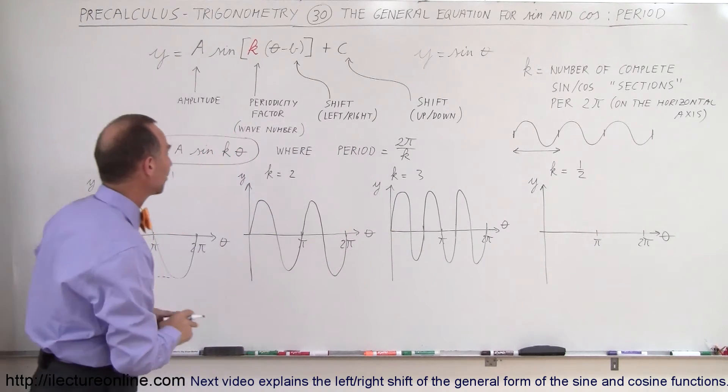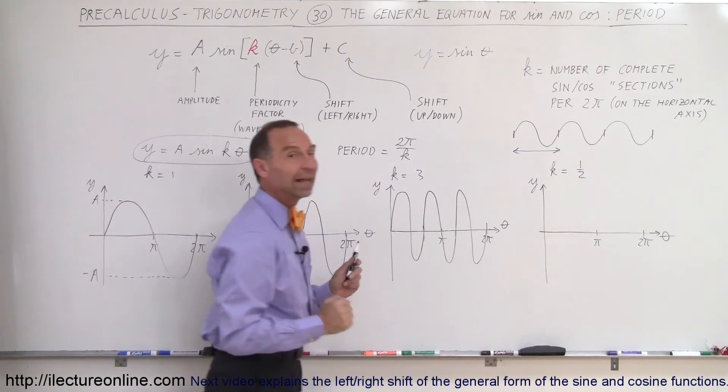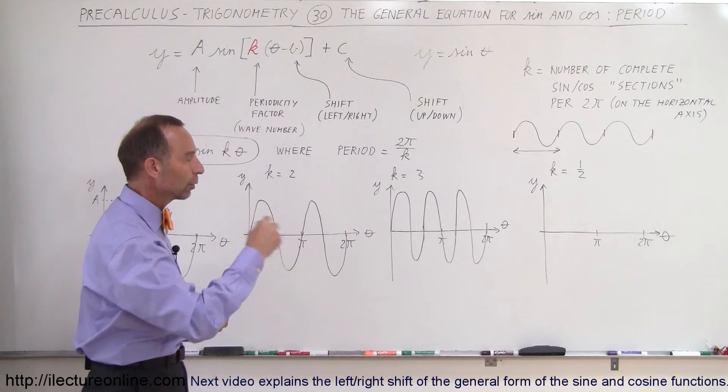So that's what k represents. The bigger the number k, the faster the oscillations come, or the more you can fit on a single horizontal distance of 2π, going around the unit circle.